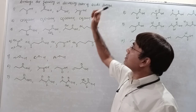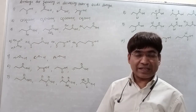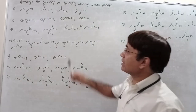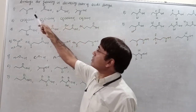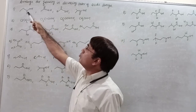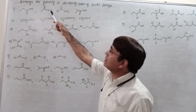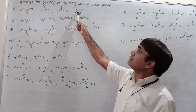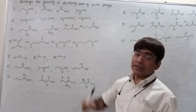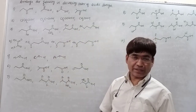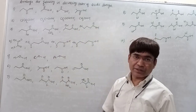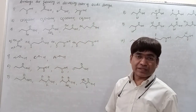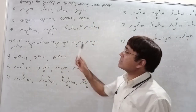Let's arrange the following in decreasing order of acidic strength and acidity. In question number 1, this is butanoic acid, acetic acid, formic acid, and this is 2-methylpropanoic acid. So let's arrange the acidity in decreasing order.